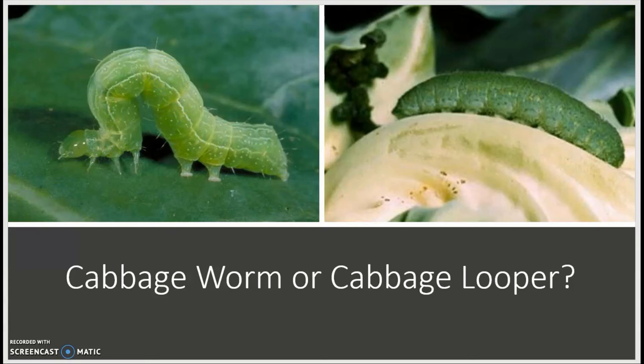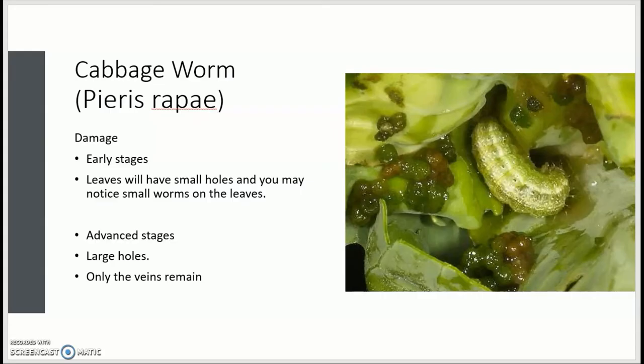The cabbage worm does not move like that. So that is one way of determining whether you have a cabbage looper or a cabbage worm. If it forms this arch, then you have the cabbage looper; if it does not, then you potentially have a cabbage worm. The cabbage worm's scientific name is Pieris rapae.